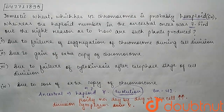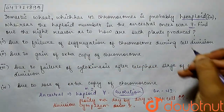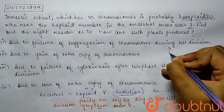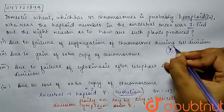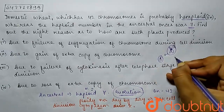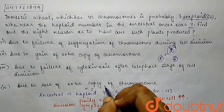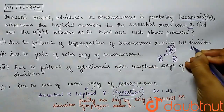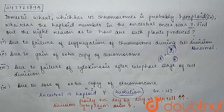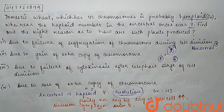So now let's see which option is correct. The first option is: due to failure of segregation of chromosomes during cell division. But if segregation fails during gamete formation, which is when chromosomes are separated, then there will be an abnormal structure or abnormal wheat production, and we cannot get a viable plant. This is why the first option is not correct.